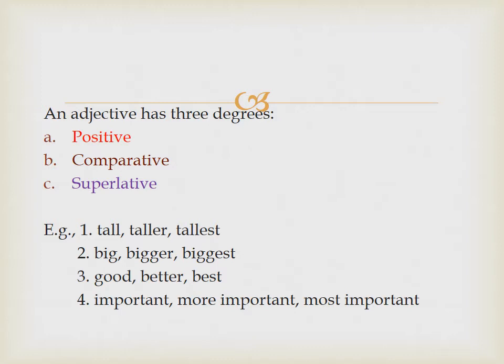But we have a few exceptions. For instance, 'good' — the positive form is 'good,' the comparative is not 'gooder,' and the superlative is not 'the goodest.' Instead, they are 'better' and 'best.' So: good is the positive degree, better is the comparative, and best is the superlative. Similarly, for 'bad,' the forms are: bad, worse (w-o-r-s-e), and worst.